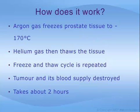Cryoablation involves inserting long, thin needles into the prostate through the skin between the scrotum and anus, called the perineum. Very low temperature argon gas circulates through the needles and freezes the prostate tissue to minus 40 degrees Celsius. Helium gas then replaces the argon and thaws the tissue. This freezing and thawing process is repeated once more, and the cancer tumor and its blood supply are destroyed. The procedure takes about two hours, and patients either go home the same day or spend one night in hospital.